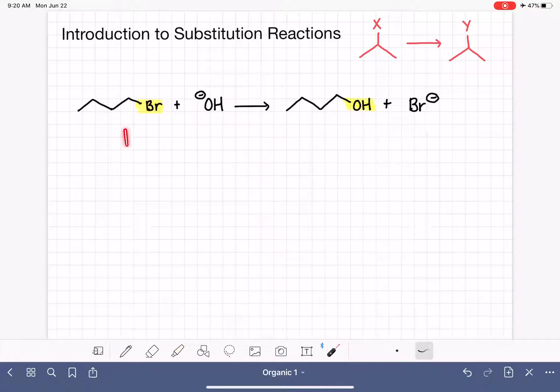We have names for all of the different components, reactants, and products in a substitution reaction. The initial organic molecule that we start with in the reaction is called the electrophile, or sometimes called the substrate. Remember, the definition of electrophile is something that loves electrons. That means that it has some aspect of the molecule that is positively charged or partial positively charged. And that aspect of the molecule is coming from the polarity of the carbon-bromine bond, which leaves that carbon atom partially positive. So that's what makes it electrophilic.